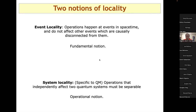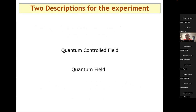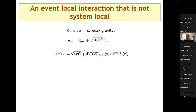Now I'll give two descriptions of the BMV experiment: one called the 'quantum control' (QC) model and another called the 'co-quantum field' model. First, let me give an example of an interaction that is event-local but not system-local. We'll discuss the gravity-induced entanglement experiment from the point of view of a model I'll argue is not quantum, yet still local in the relativistic sense.